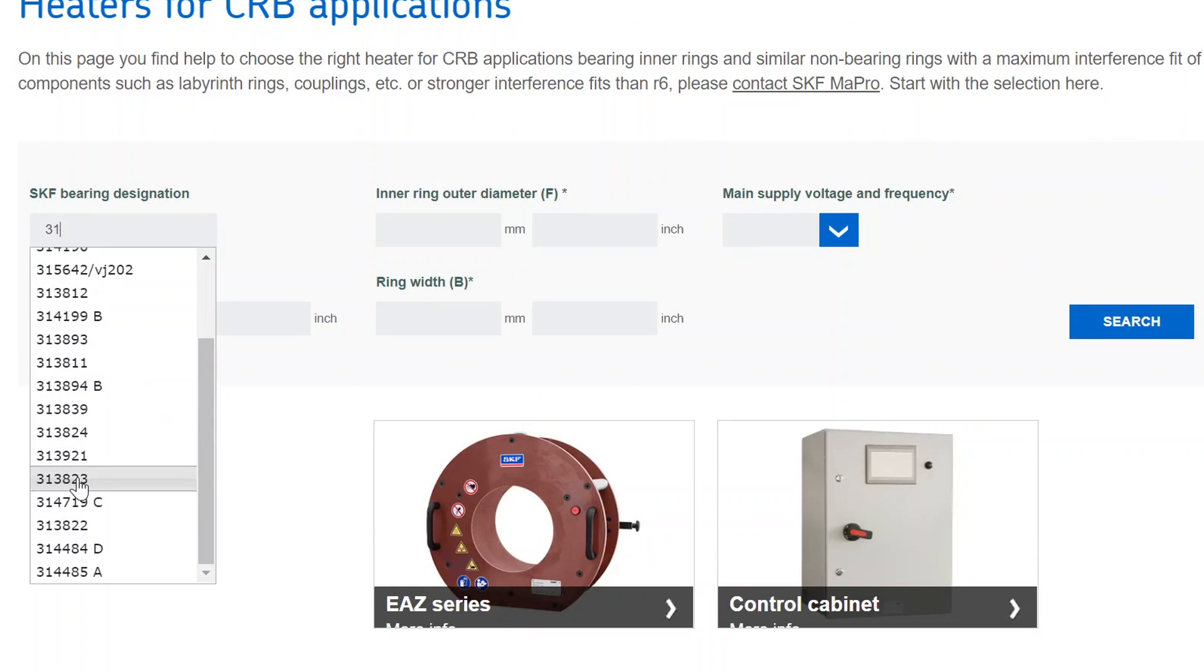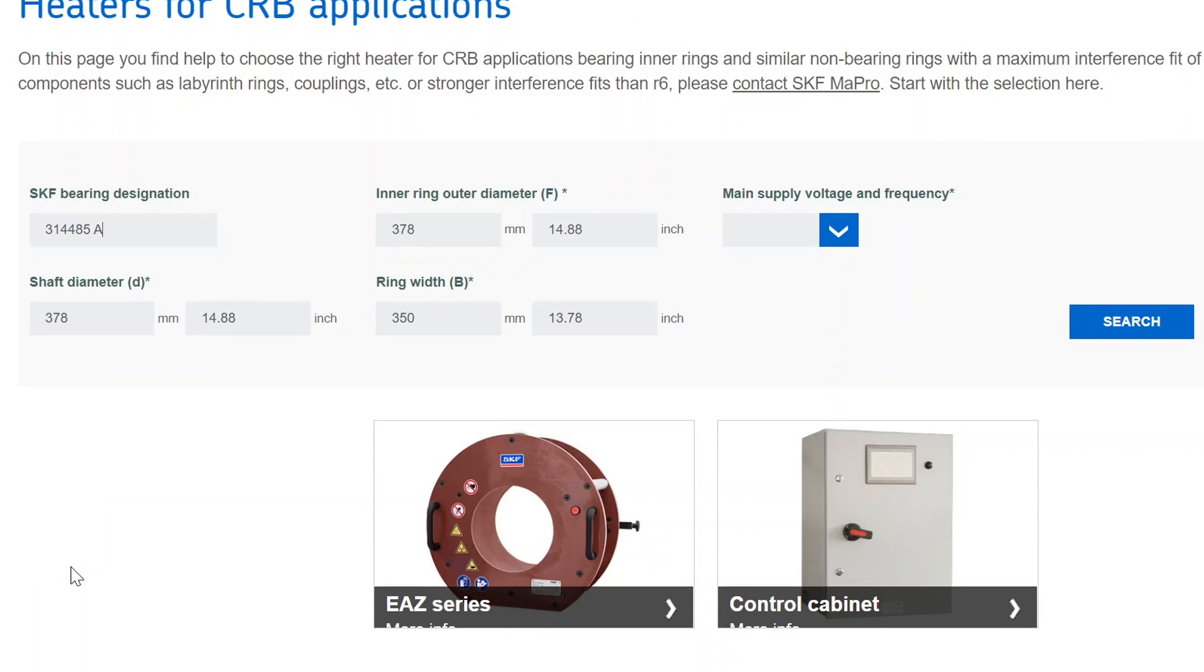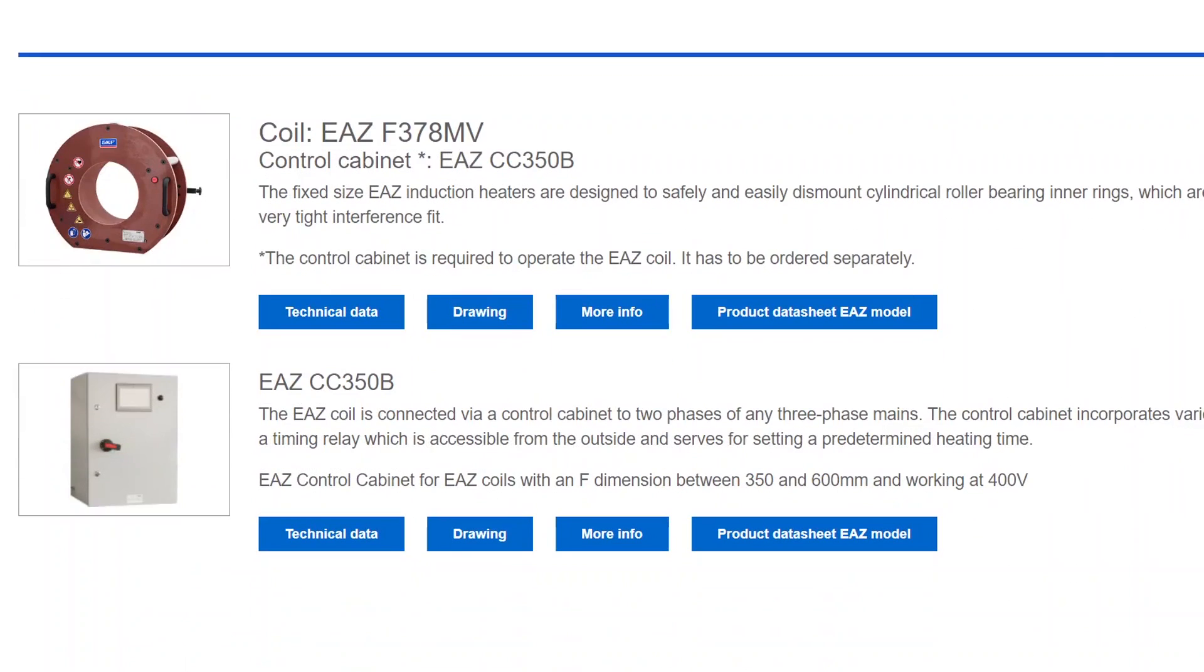This will populate the inner and outer ring measurements for your application. Next, select your main supply voltage and frequency, and click on Search to identify the correct heater.